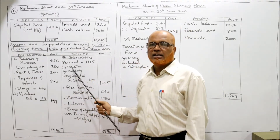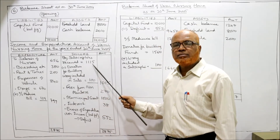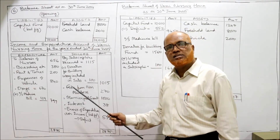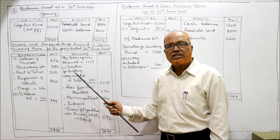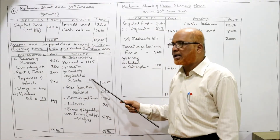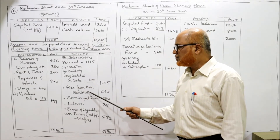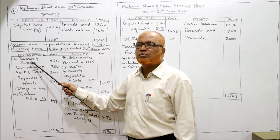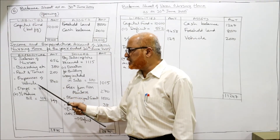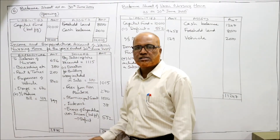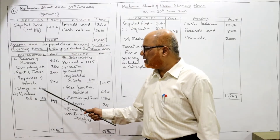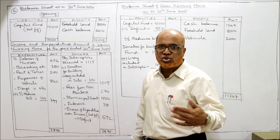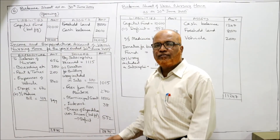For the income and expenditure account: subscription received is 1,115, minus 100 rupees donation for building fund wrongly included, giving subscription income of 1,015. Fees from non-members, municipal grant, and interest are all revenue incomes and are taken directly. On the expenditure side: salary of nurses, boarding, rent and taxes, and expenses of vehicle are taken directly. Drugs: payment of 670 plus outstanding medicine bill of 129 equals total drugs expenditure of 799.